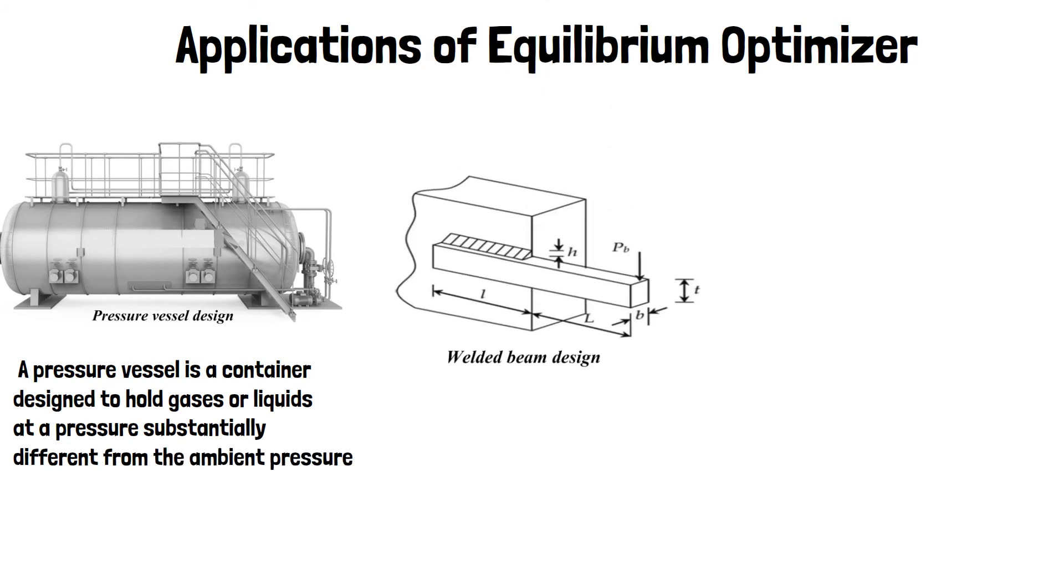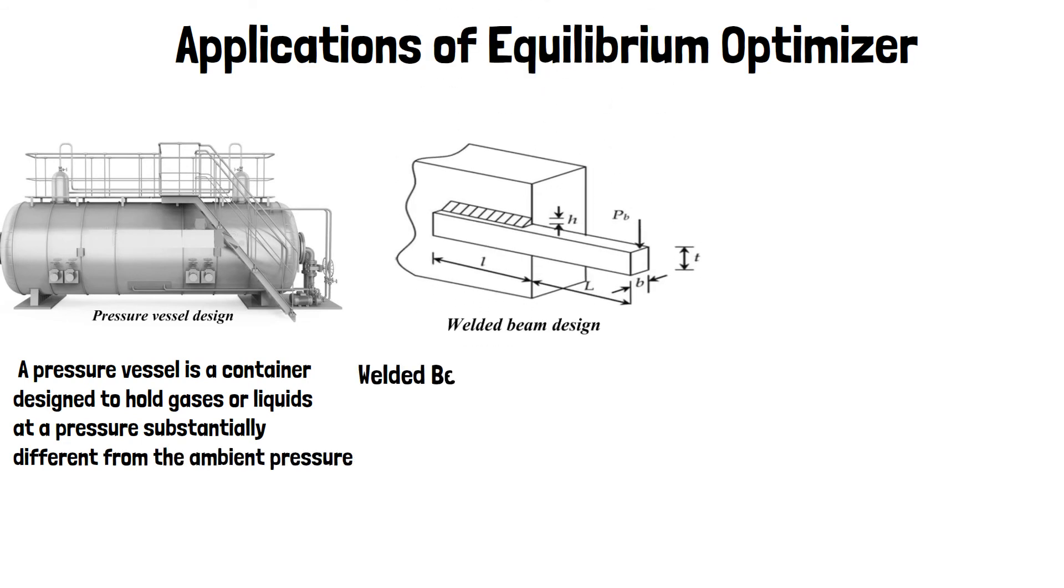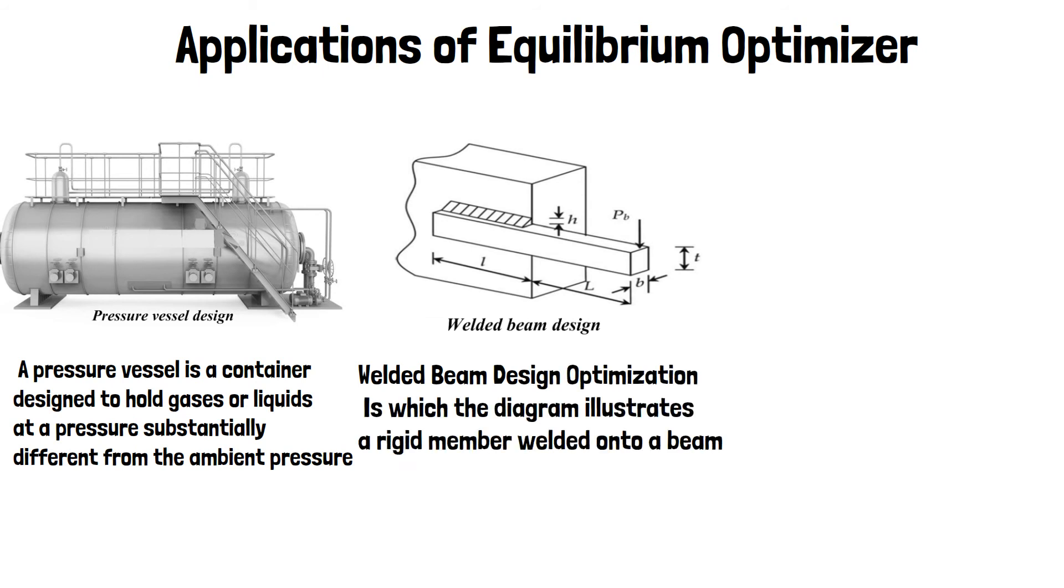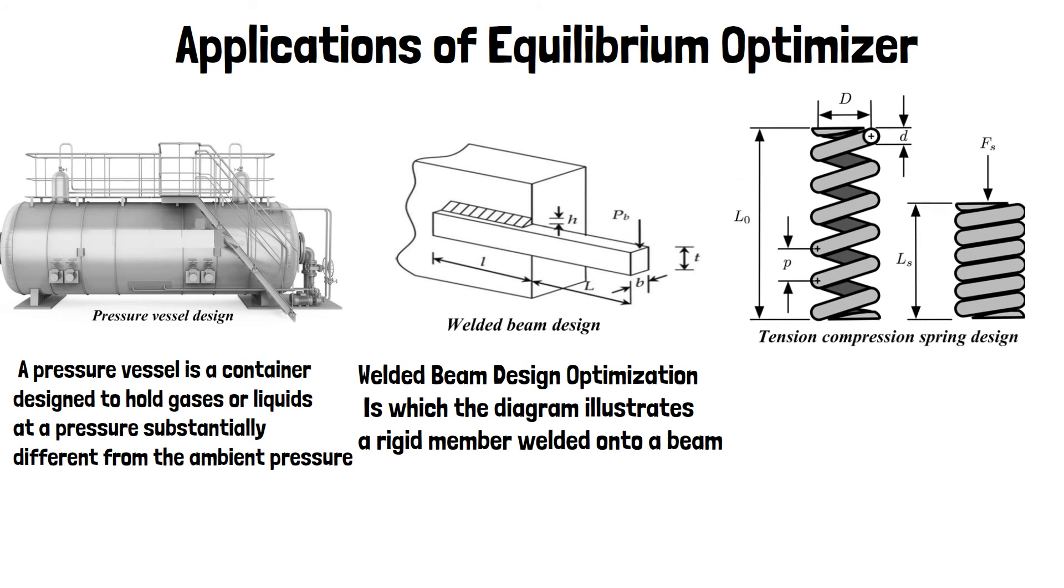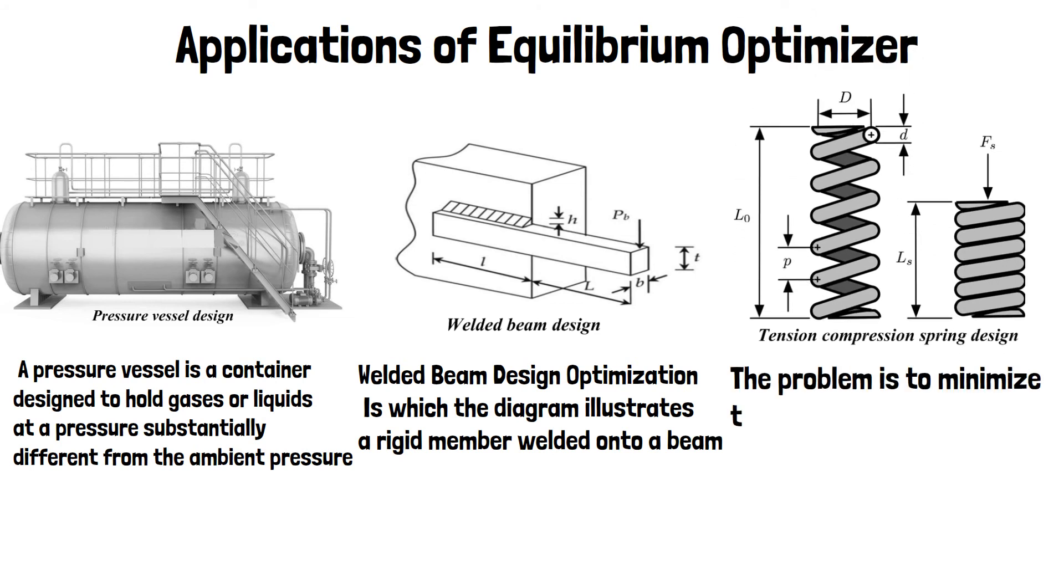Welded beam design. Welded beam design optimization is where the diagram illustrates a rigid member welded onto a beam, and tension compression spring design is the problem of minimizing the volume V of a coil spring under a constant tension compression load.